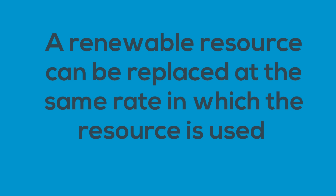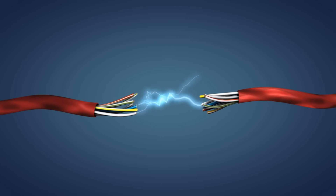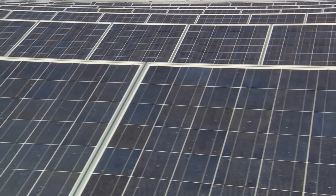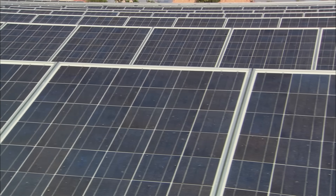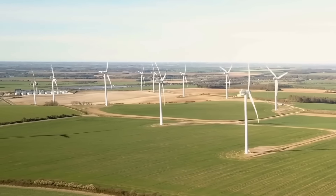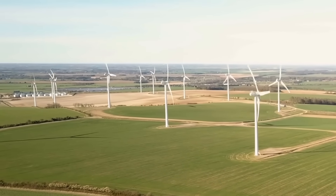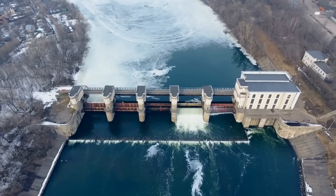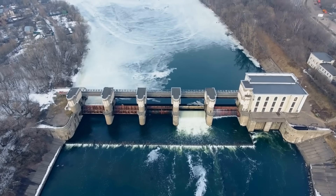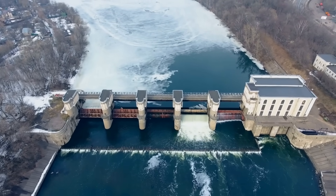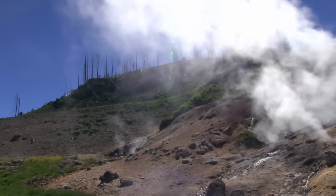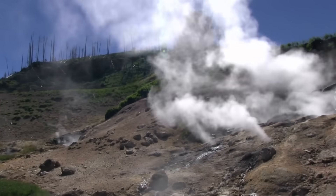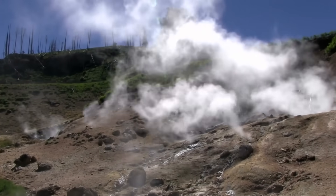Common renewable resources used to produce energy include solar, like these solar panels converting solar energy into electricity; wind, which can turn turbines to produce electricity; hydroelectric, which involves moving water turning a turbine; and geothermal, which involves capturing the underground steam that flows to a turbine and then produces electricity.